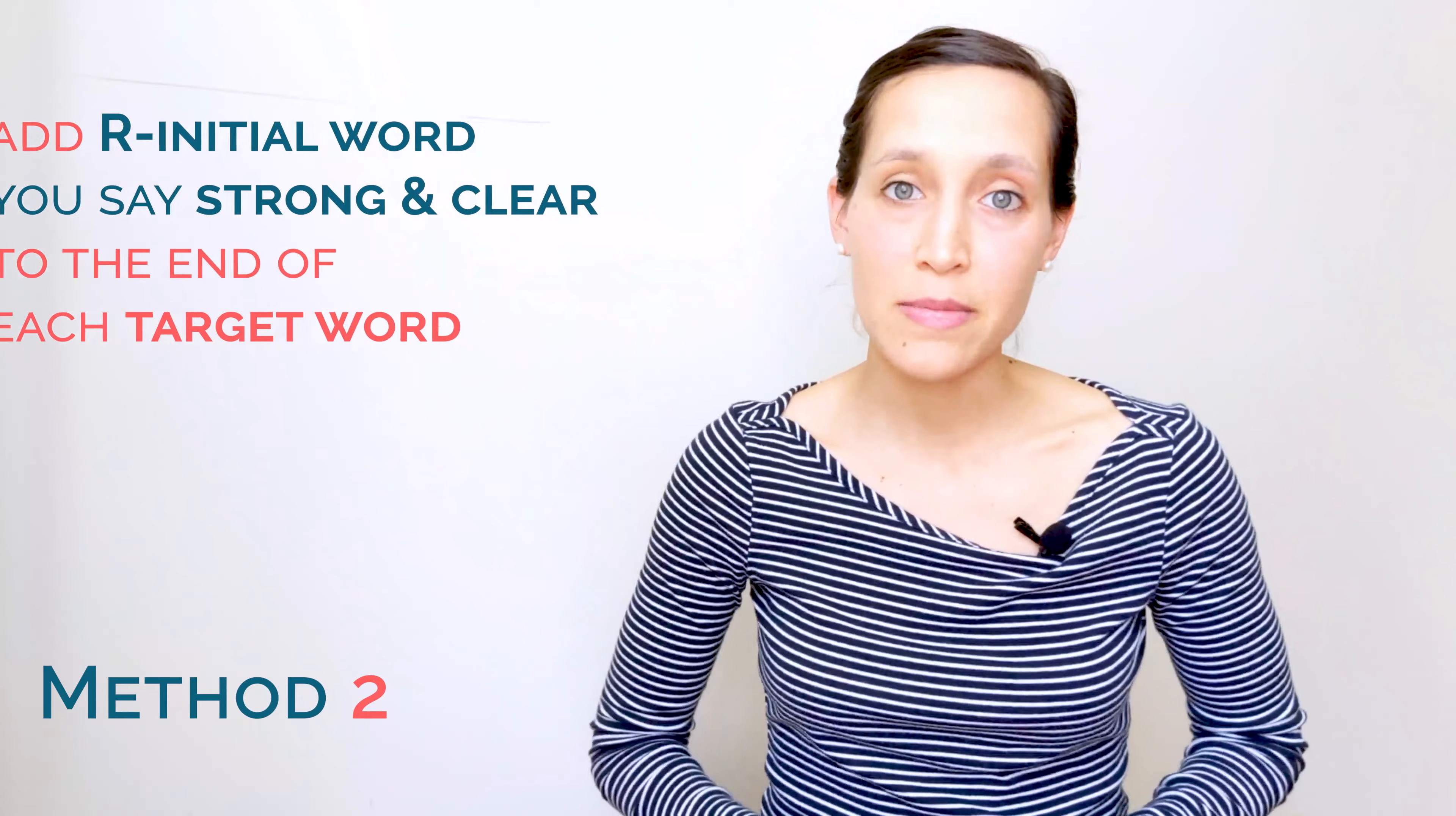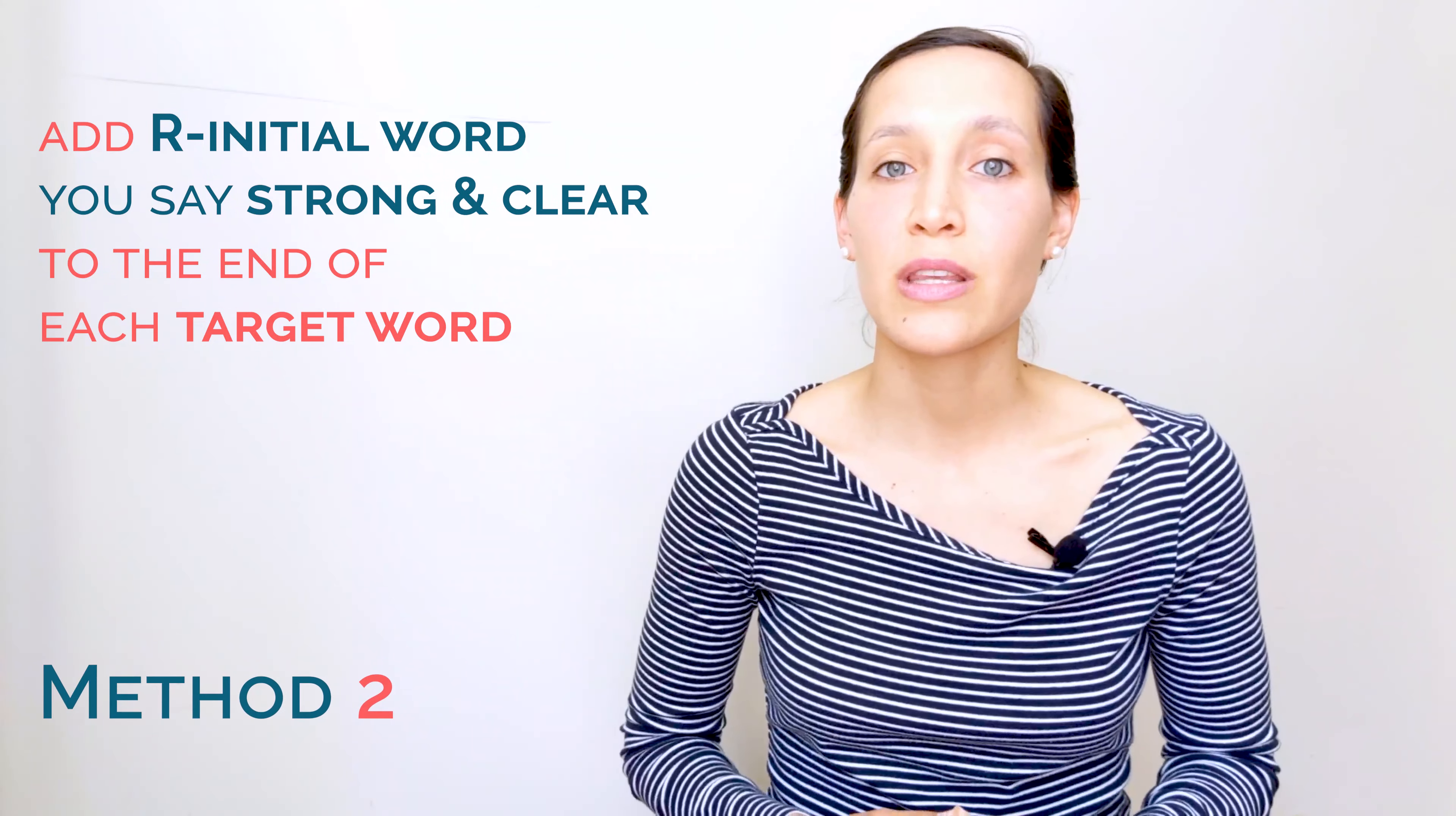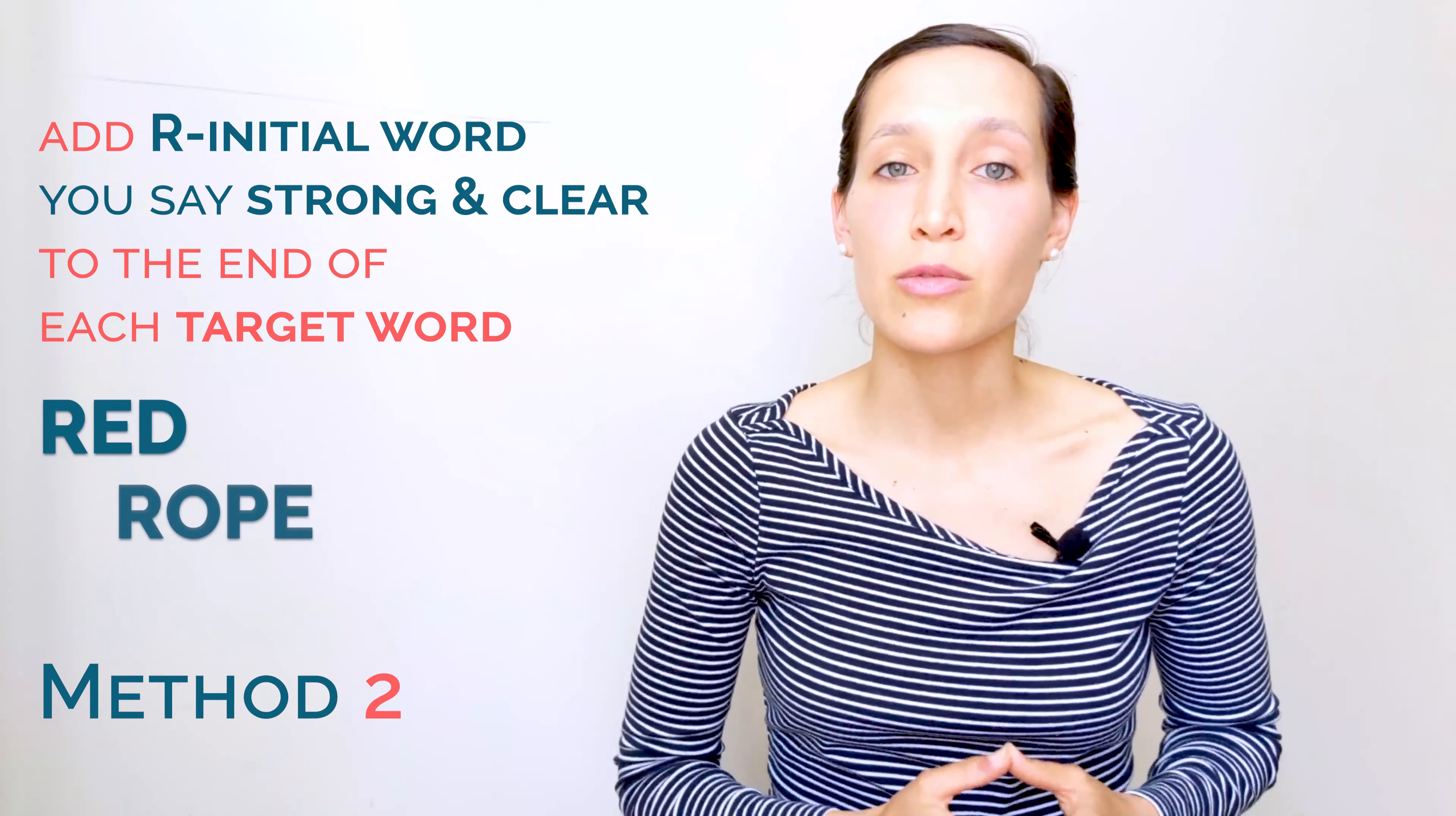For method two, you're going to take the same set of eight words but you're going to add on the end of it a word in which you say the R sound very strong at the beginning of the word such as red, rope, rug.